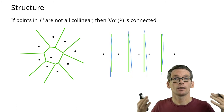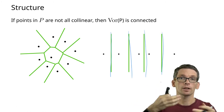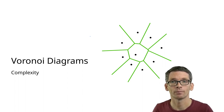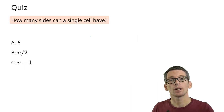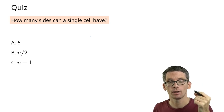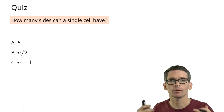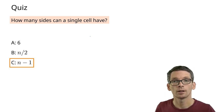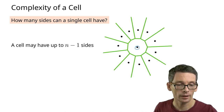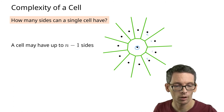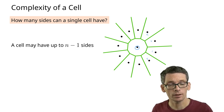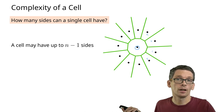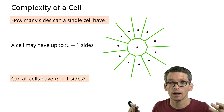Next let's look at the complexity of the Voronoi diagram: how many edges, vertices, and faces can it have for n points? Starting with a simpler question: how many sides can one single Voronoi cell have? The options are 6, n/2, or n−1. The correct answer is n−1: one central point's cell can be adjacent to the cell of every other point, giving a cell with n−1 sides. This could mean quadratic complexity — but can every cell simultaneously have n−1 sides? Luckily, the answer is no.